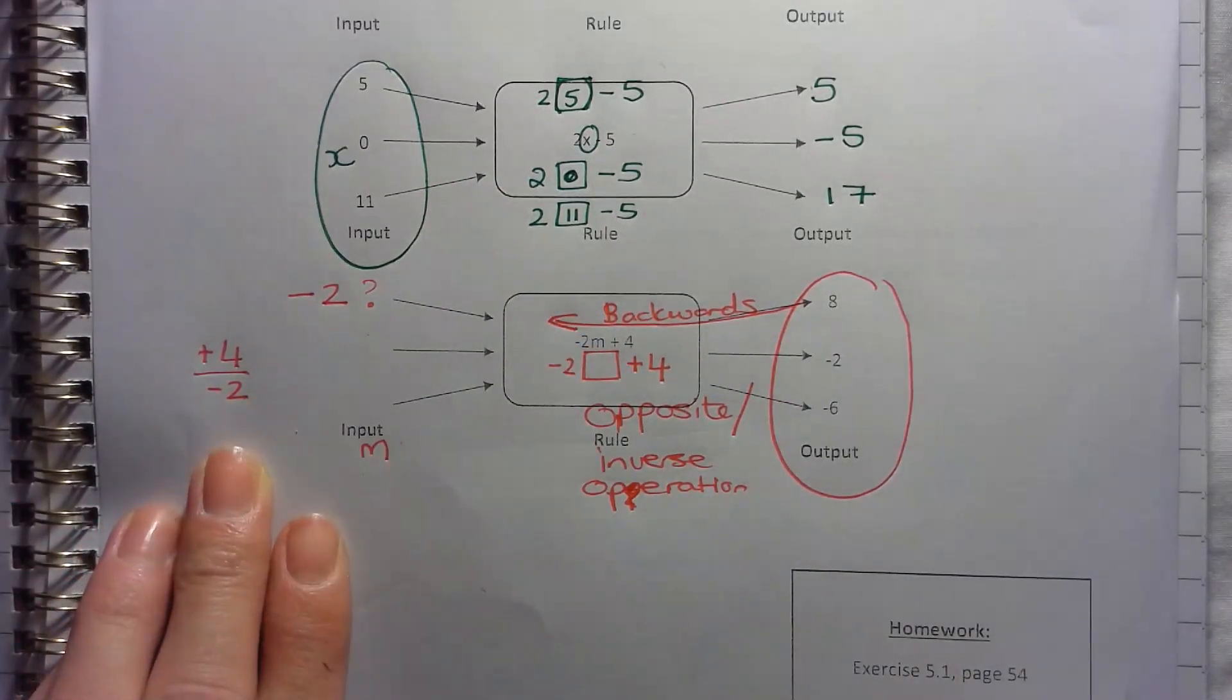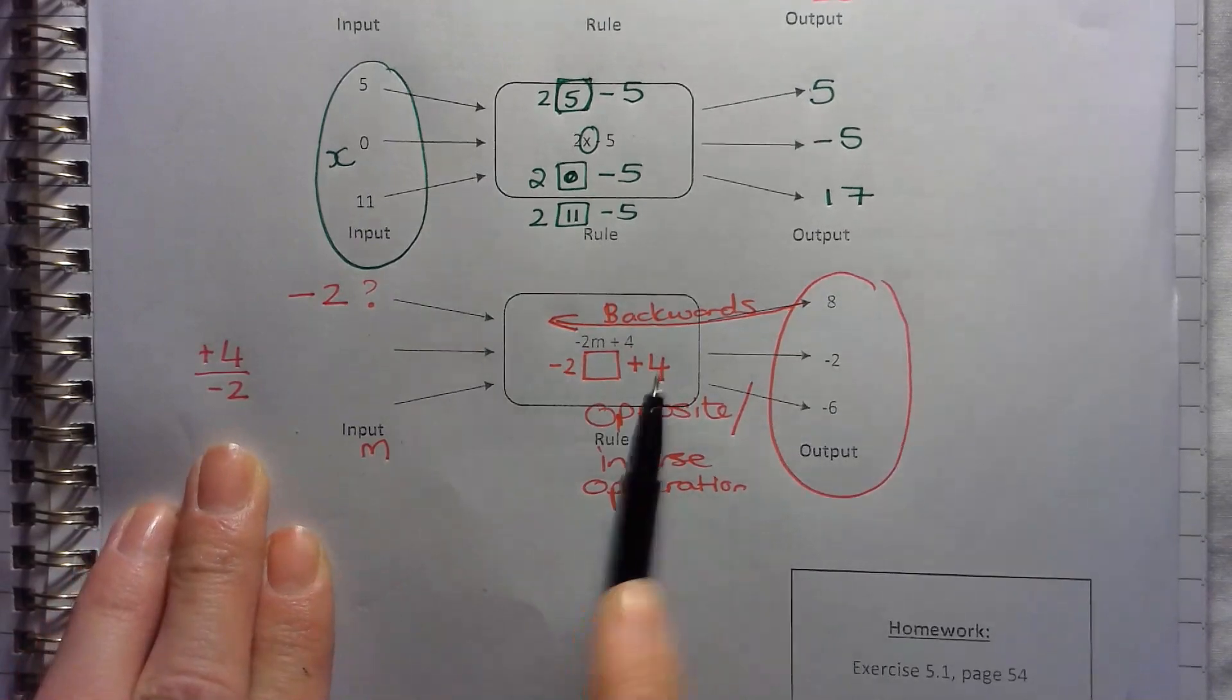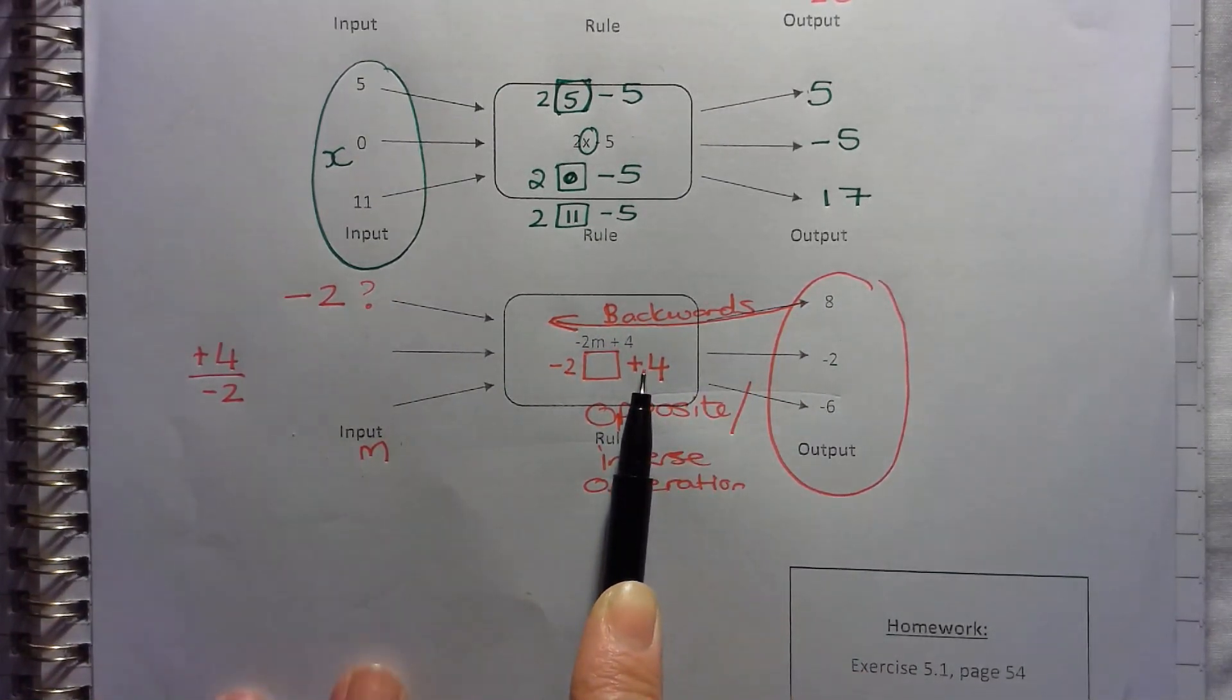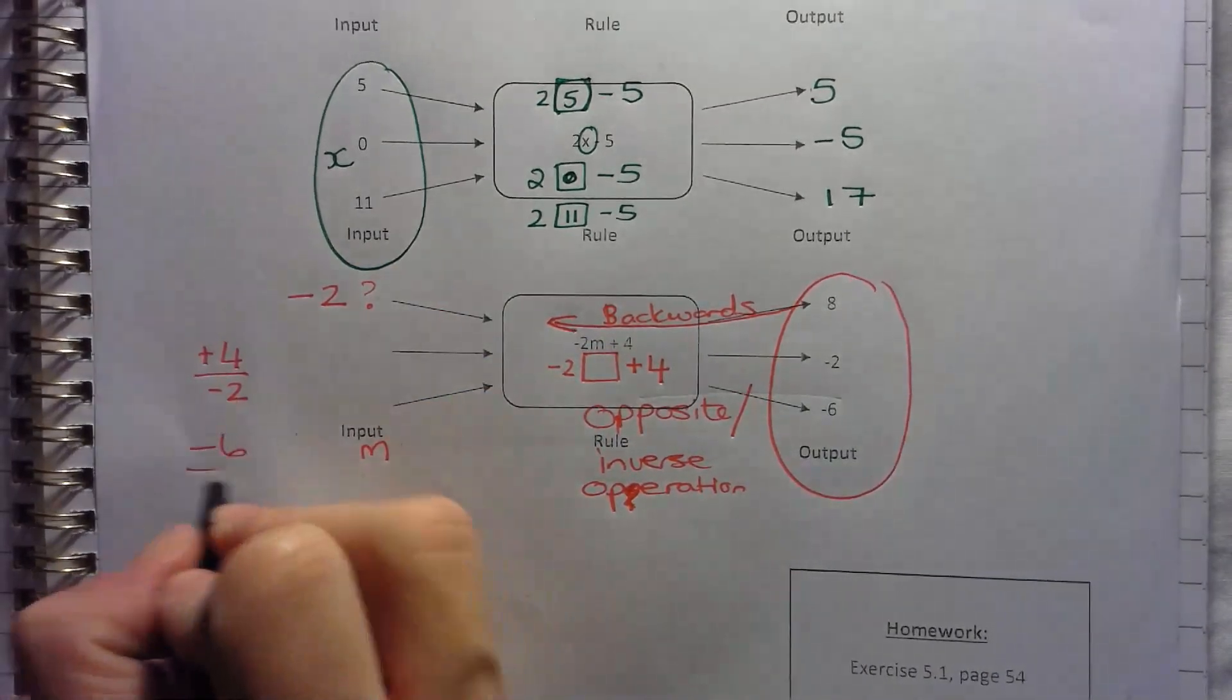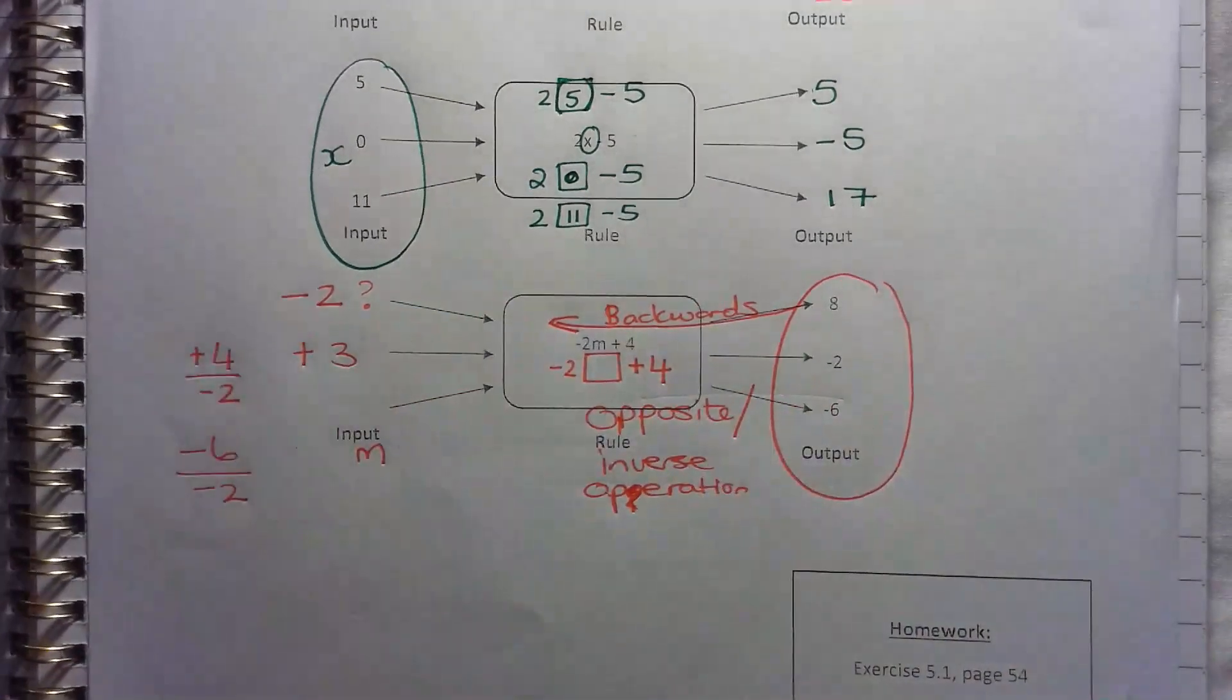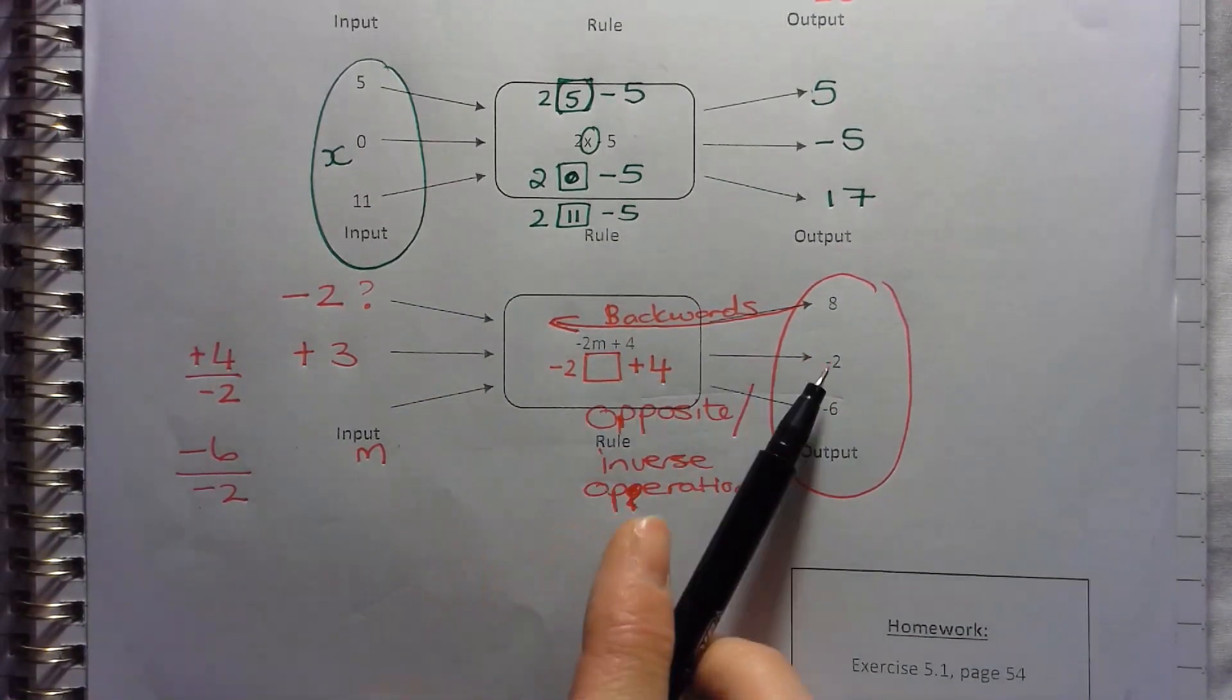And you can check, go back from input to output. Negative 2 times negative 2 would give me positive 4, plus 4 would give me 8. So let's do this one now. Negative 2, I'm going to take another 4 away from it to make it negative 6. And so then I have negative 6 divided by negative 2. Negative over negative gets me a positive. 6 divided by 2 is 3. Check yourself, 3 times negative 2 is going to give me negative 6, plus 4 is negative 2.